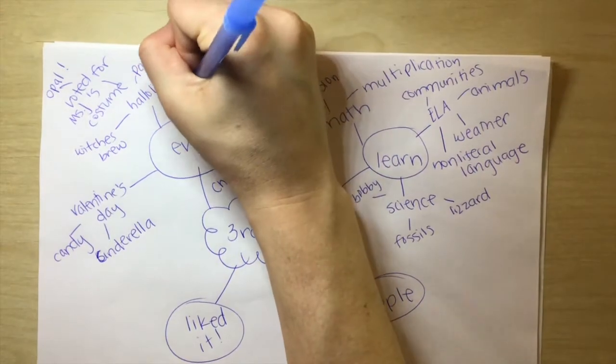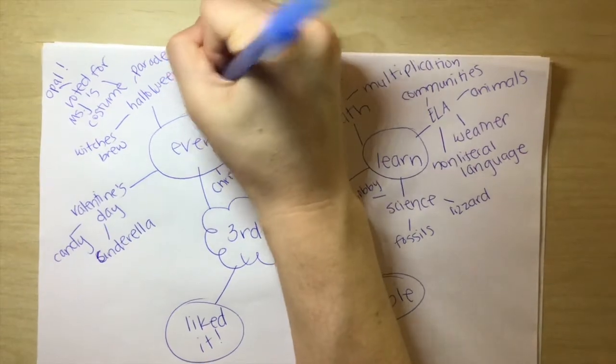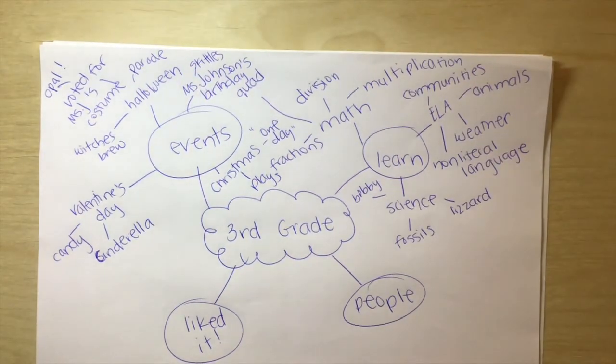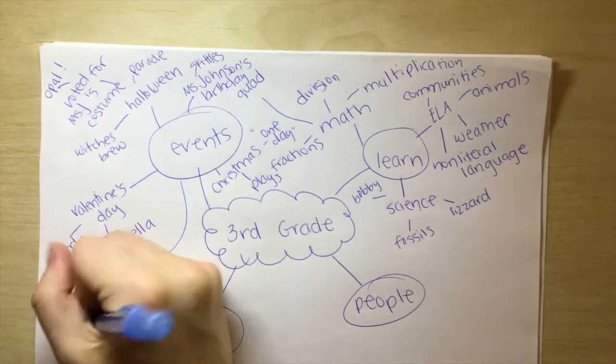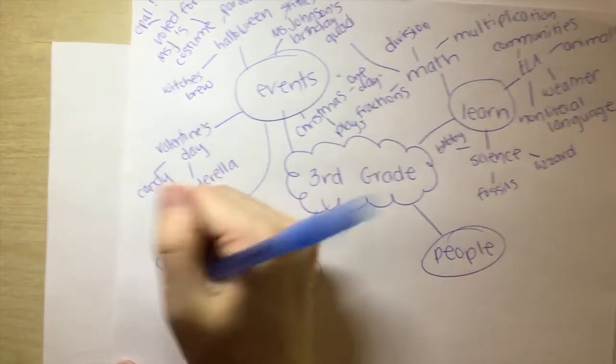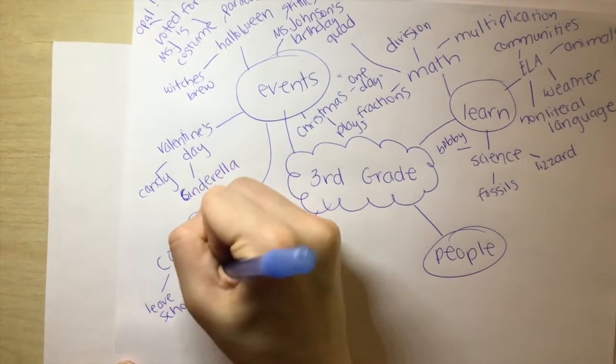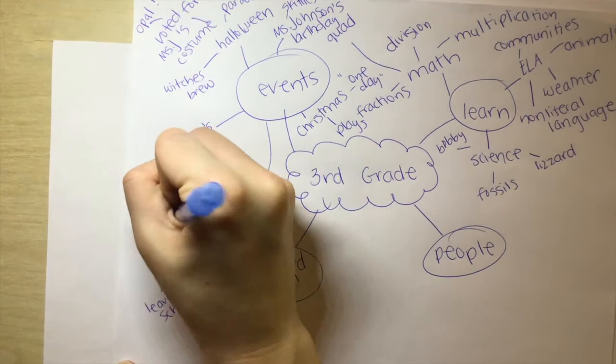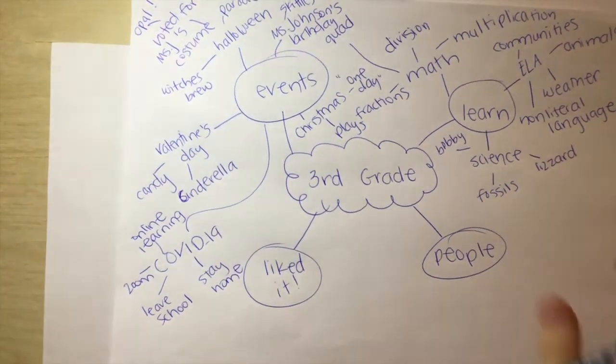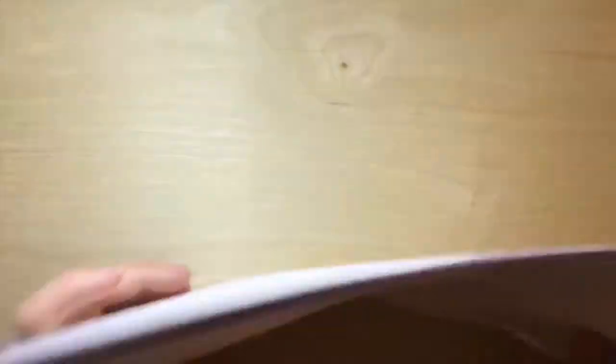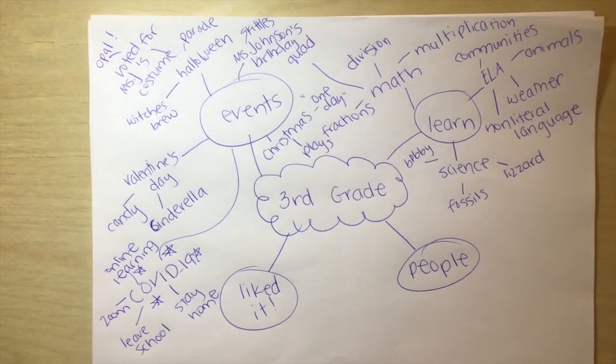One last thing that I remember is Ms. Johnson's birthday. I'm running out of room. So we did so much. Did Skittles. Remember we graphed and did math Skittles. That was super fun. Other events that happened. COVID. COVID-19. So what happened with COVID-19? We had to leave school. We had to stay home. Do online learning. We had to Zoom. Right? COVID-19 is one of the big things that happened this year that we're going to remember, I think forever.